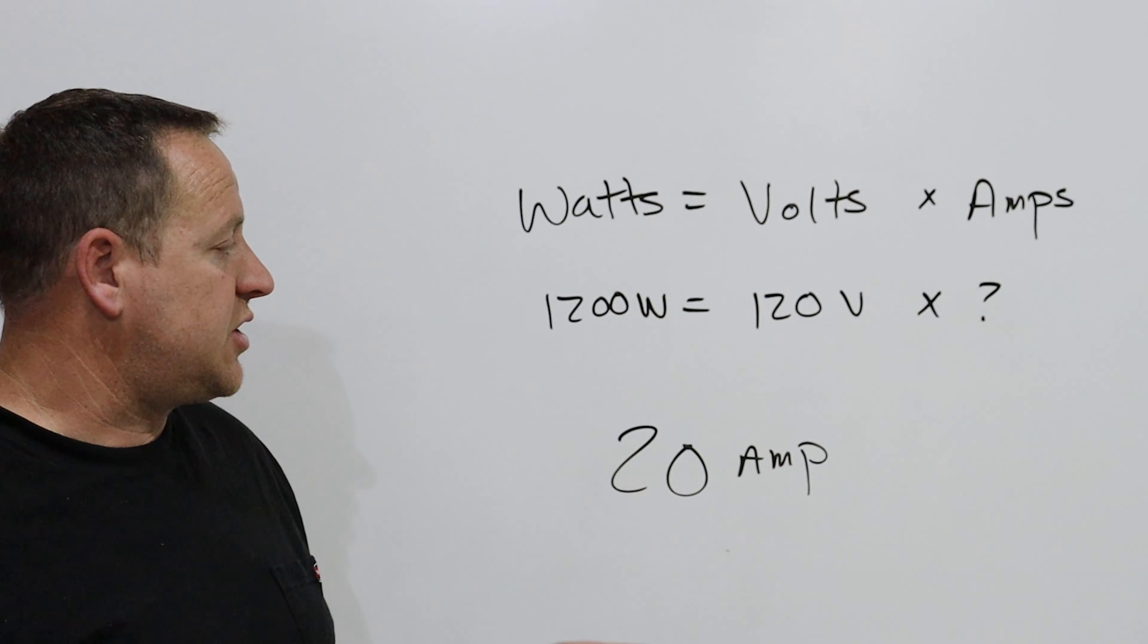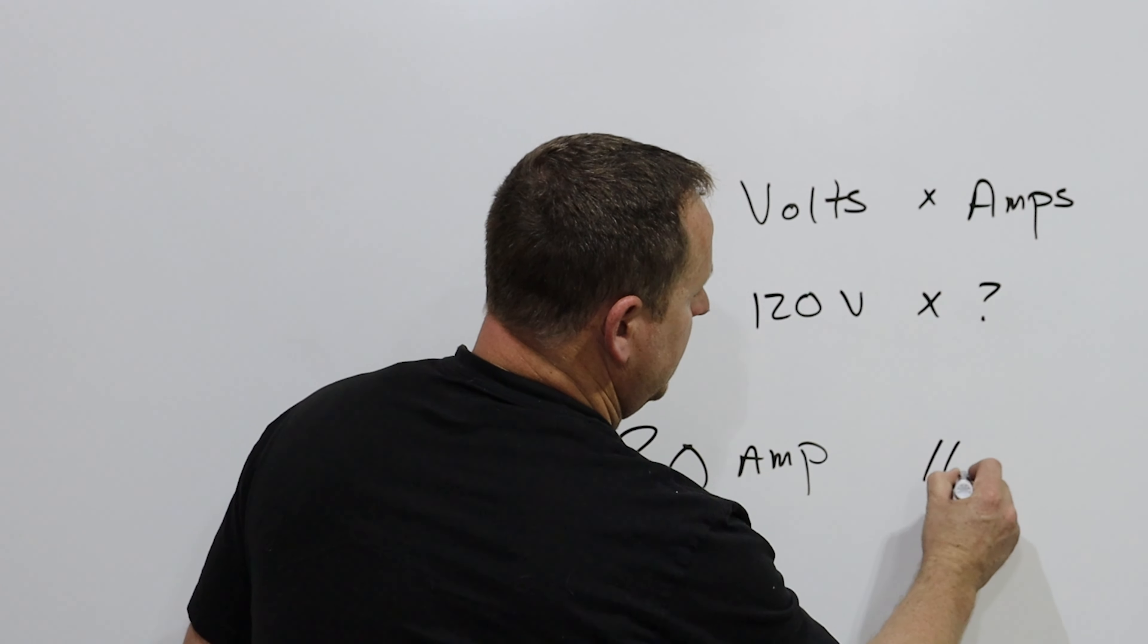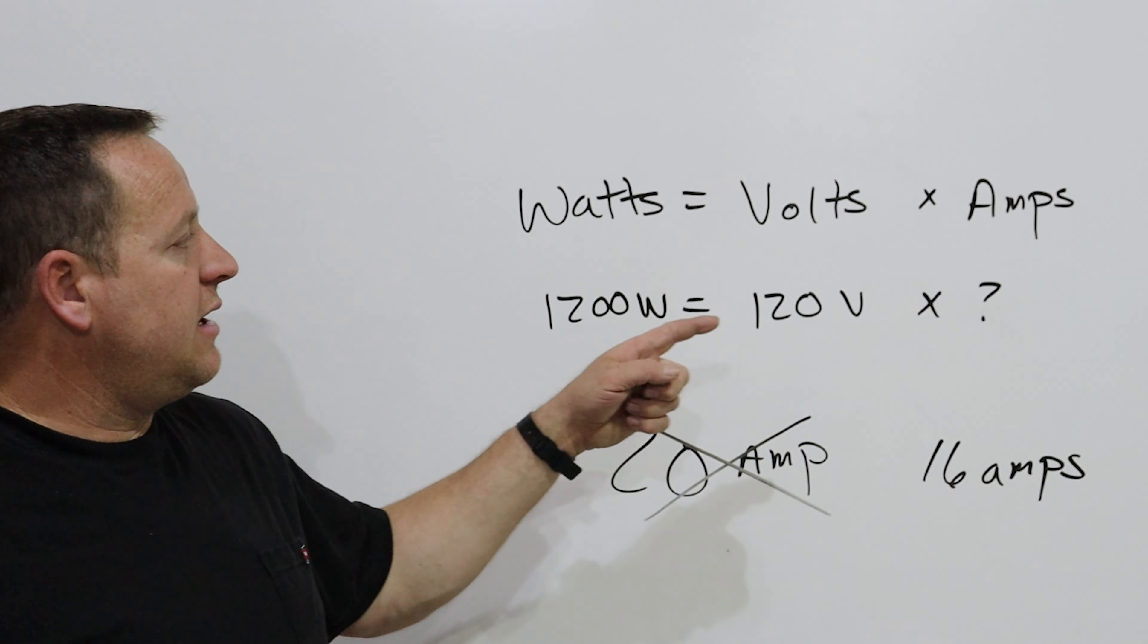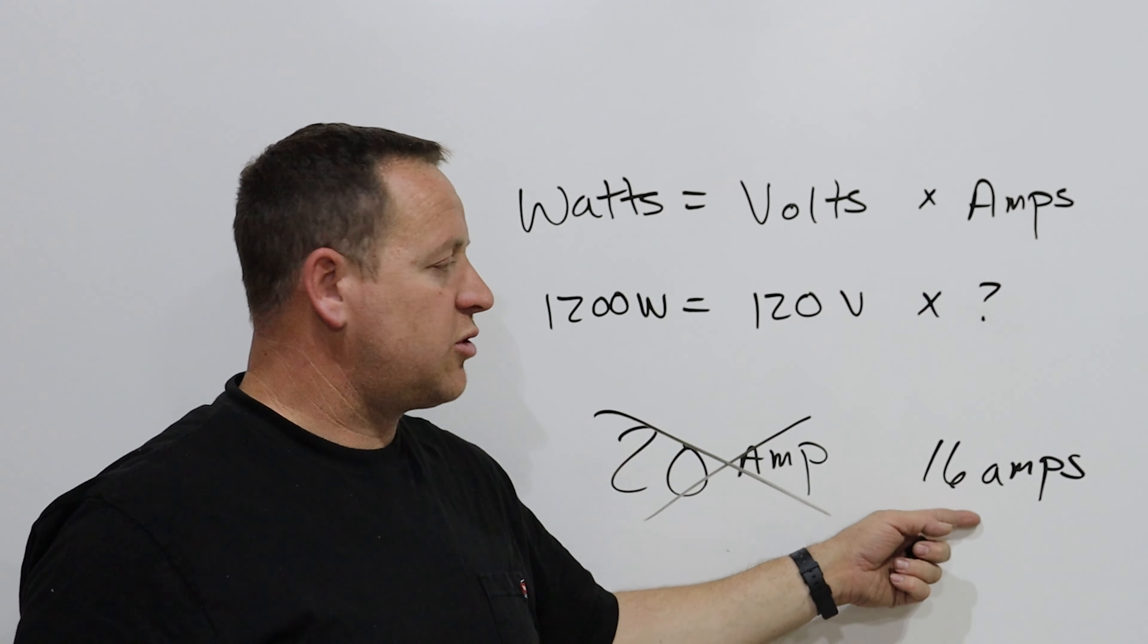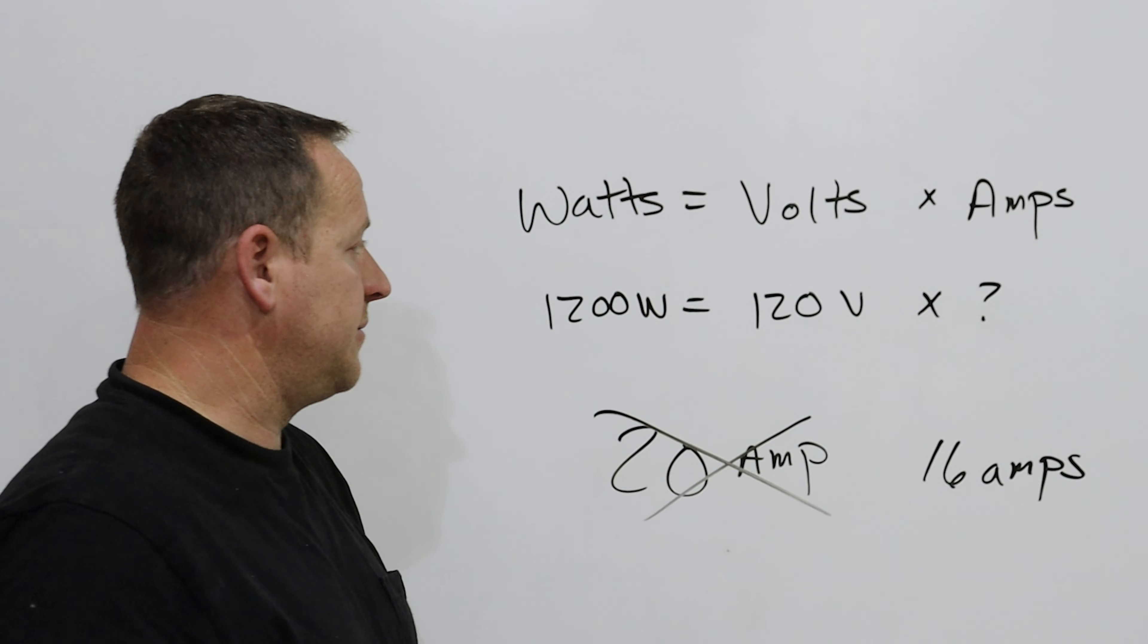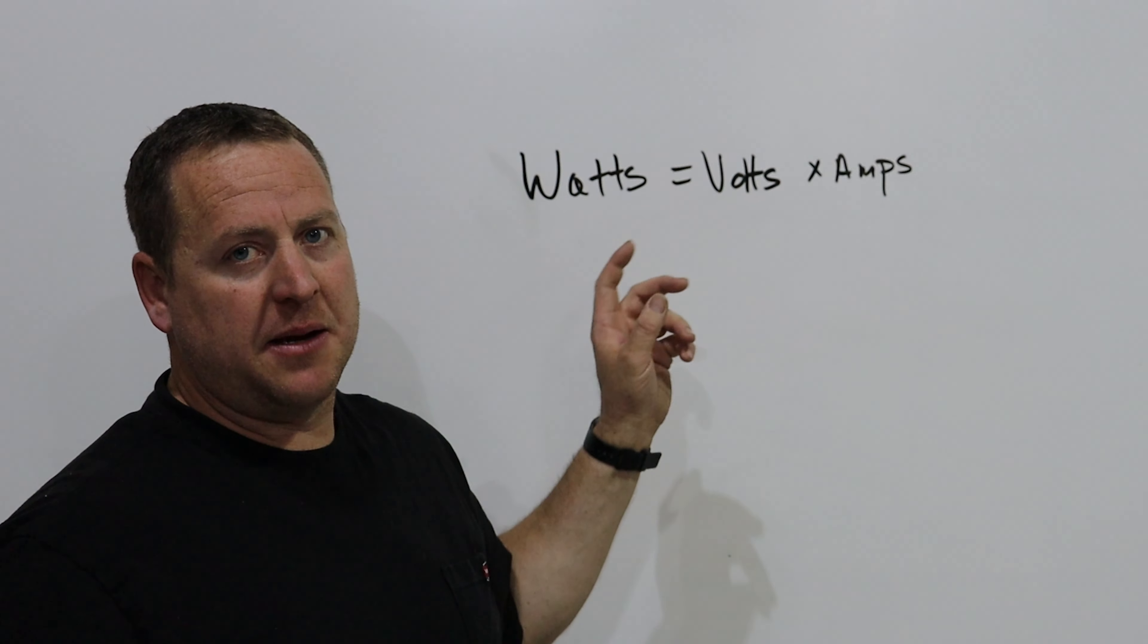With a 20 amp circuit, it's generally going to trip your breaker somewhere around 16 amps. So really you want to be figuring on what you can run and get somewhere up to about 16 amps, which is 80% of the capacity of the circuit.